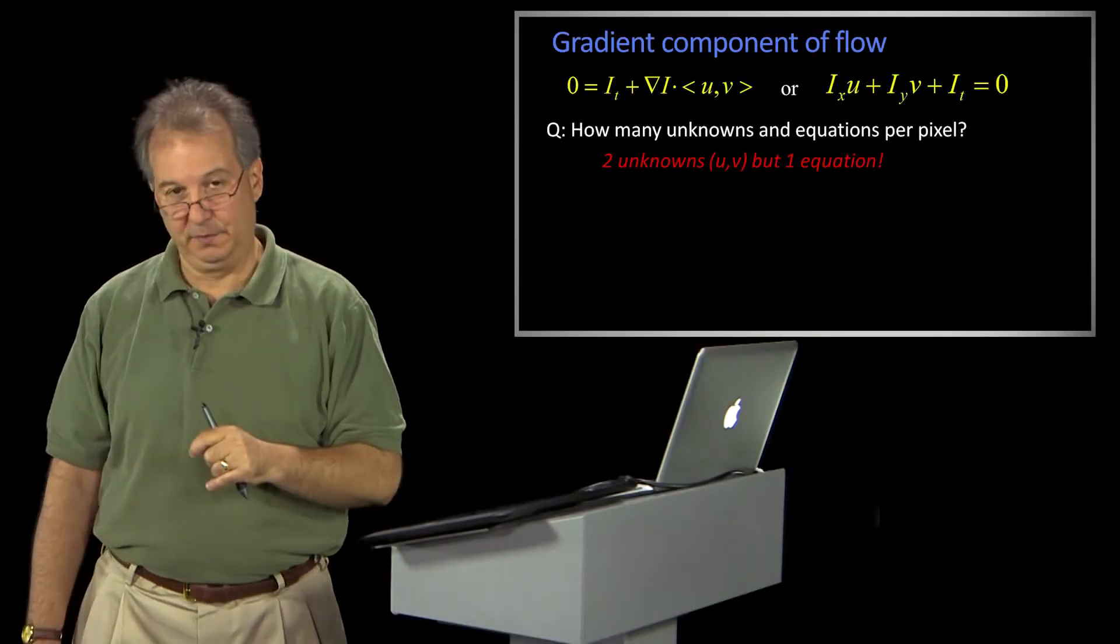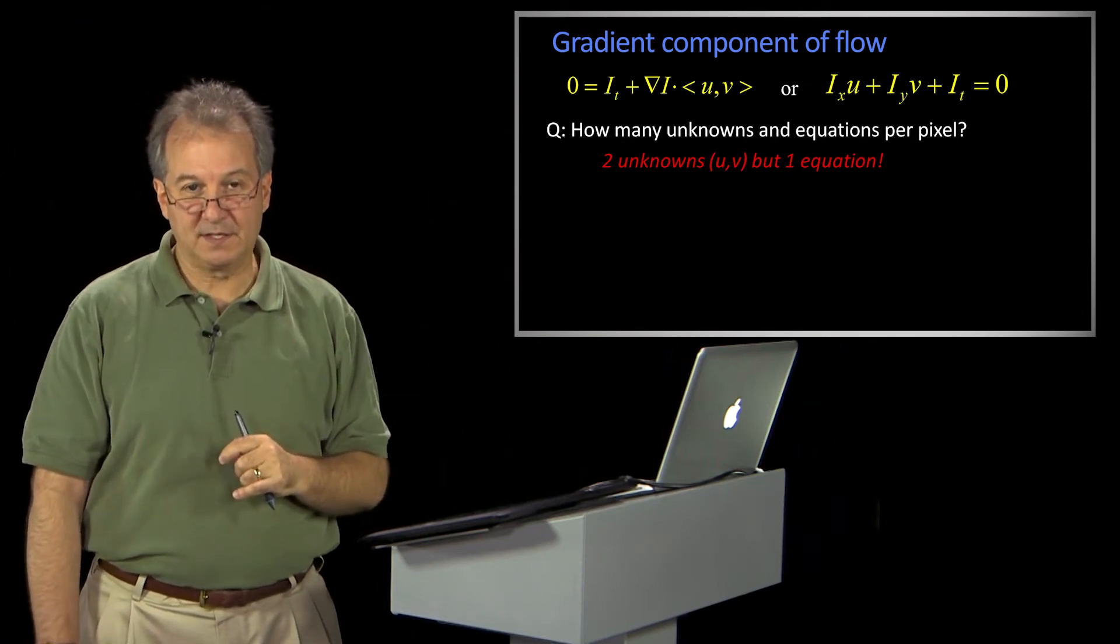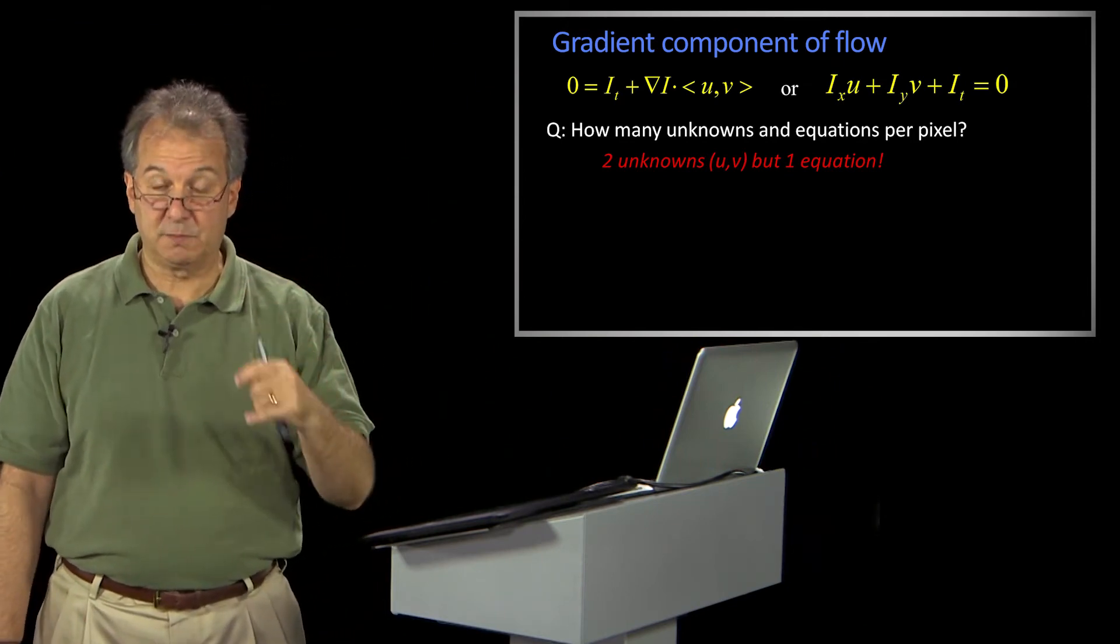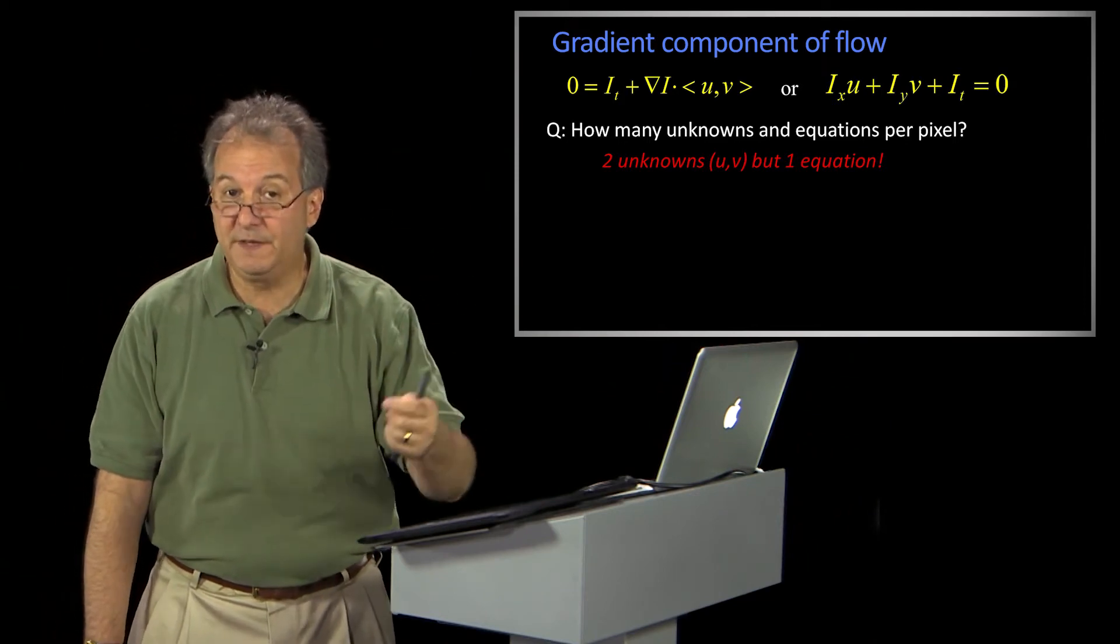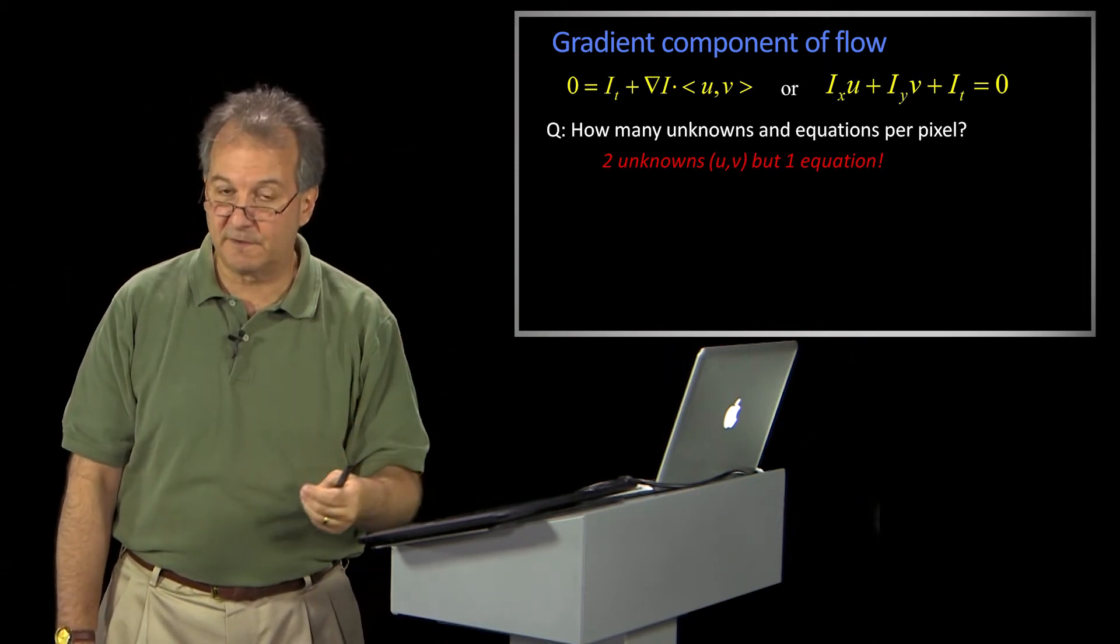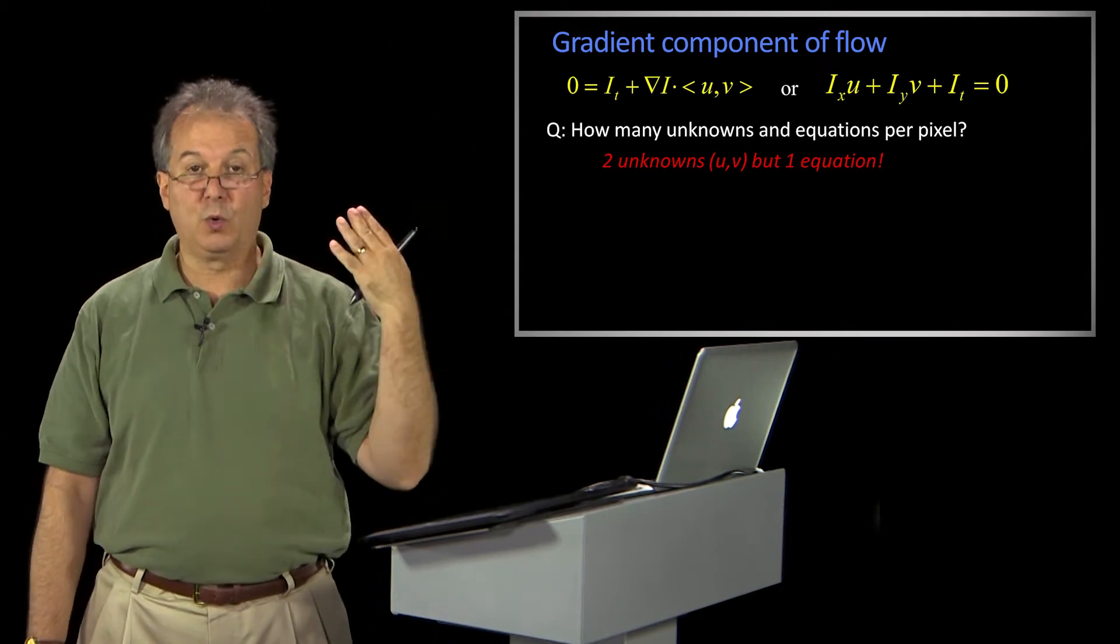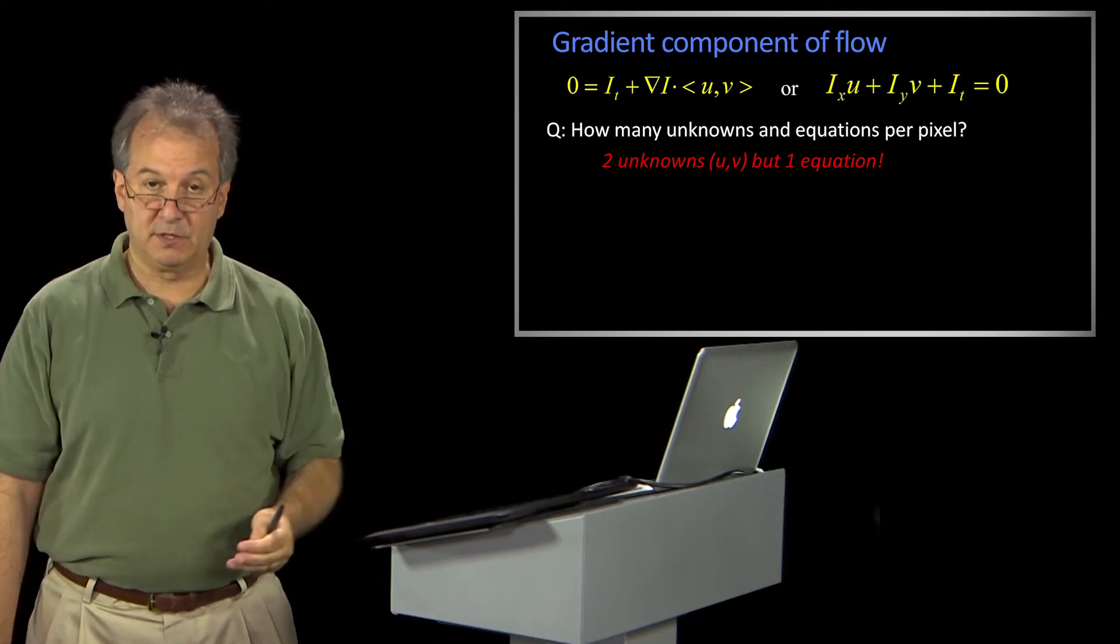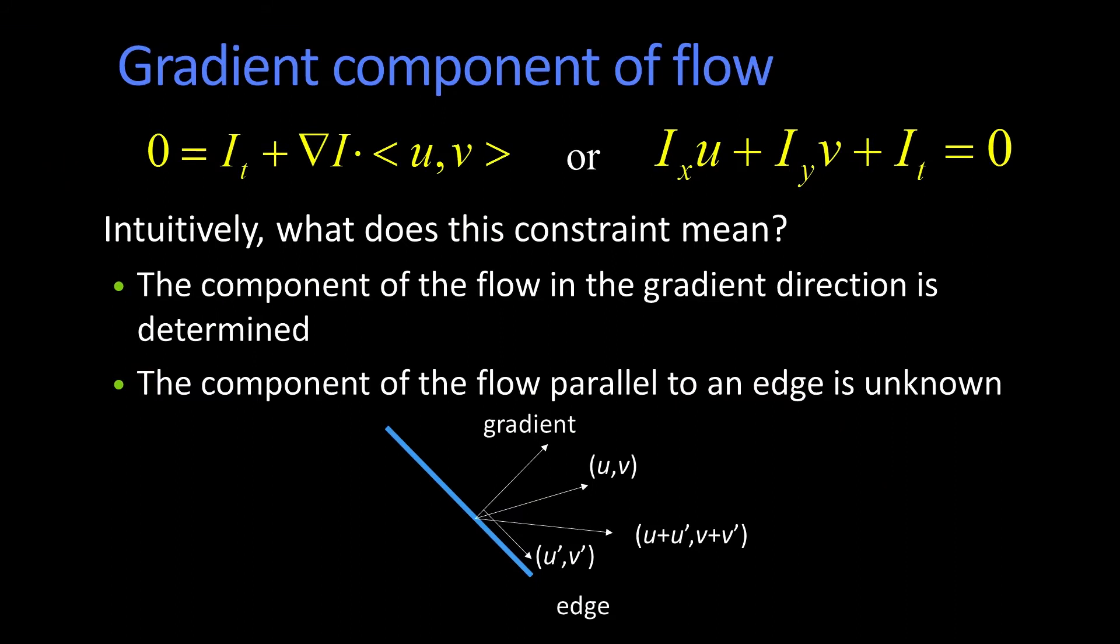This should bother you, right? It's very hard to solve things when you've got twice as many unknowns as you have equations, because remember, I have a different u and v possibly for every pixel. So I've got two times the number of pixels unknowns, and I've got one equation per pixel. What's going on here?